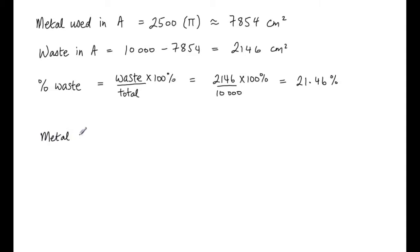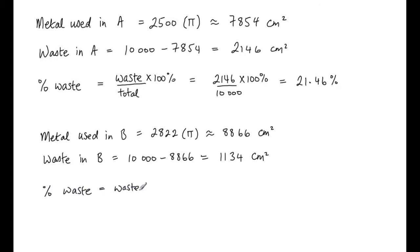Now we have to do the same for method B. The metal used in B, well we know that there's 2822 disks, each disk is pi in area, so the total area of these is 8866 centimeters squared. How much is wasted? The wastage in B would be the total again, 10,000, take away what was used, and we see that there is 1134 centimeters squared. So the percentage waste again is the same formula as last time, the waste divided by the total, multiplied by 100 percent. And this time we see when we sub the numbers in, it's 11.34 percent. It's quite a lot less wastage, much more effective use of the resource. That would be my recommendation.